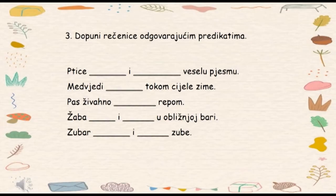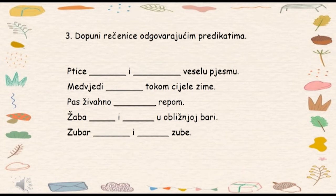Treći zadatak je sličan prethodnom. Potrebno je da dopunite rečenice odgovarajućim predikatima. Rečenice glase ovako: Ptice – dva prazna polja – veselo u pjesmu. Medvijedi – prazno polje – tokom cijele zime. Pas živahno – prazno polje – repom. Žaba – dva prazna polja – u obližnjoj bari. Zubar – dva prazna polja – zube.